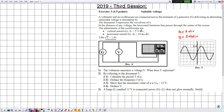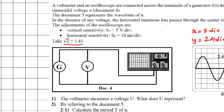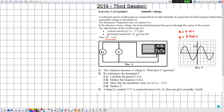The vertical sensitivity SV is given by 5 volts per division. The horizontal sensitivity SH is given by 10 milliseconds per division. Since milliseconds must be converted to seconds, we divide by 1000, giving SH equal to 0.01 seconds per division.